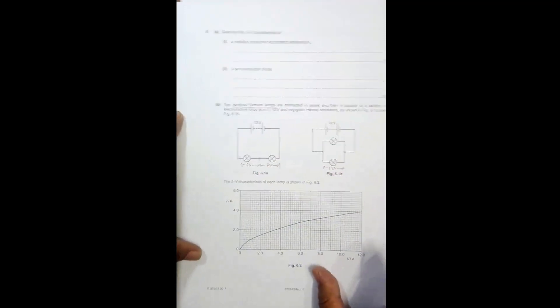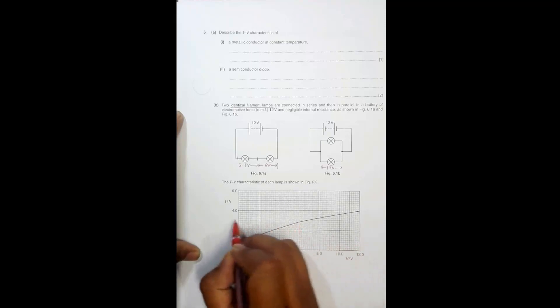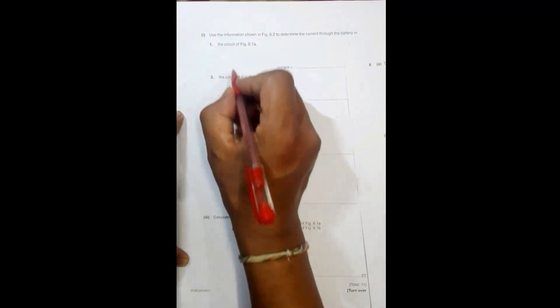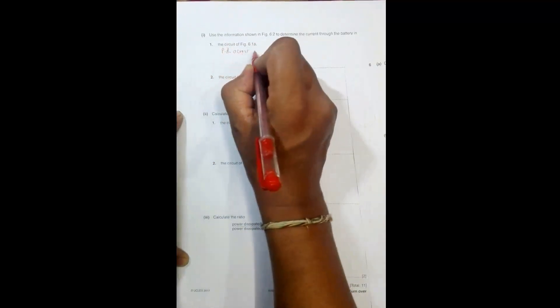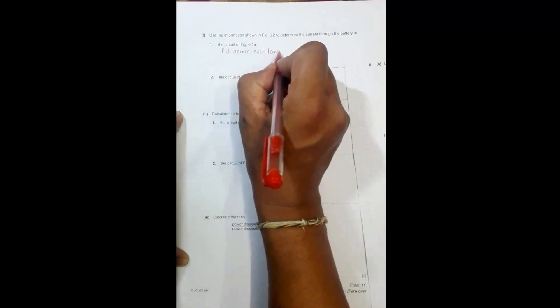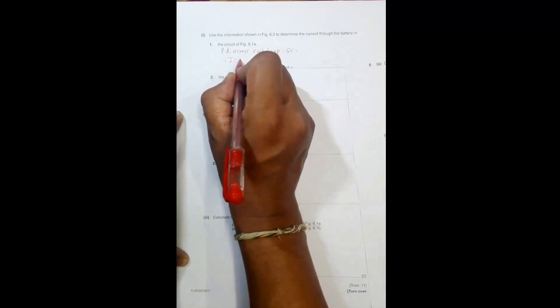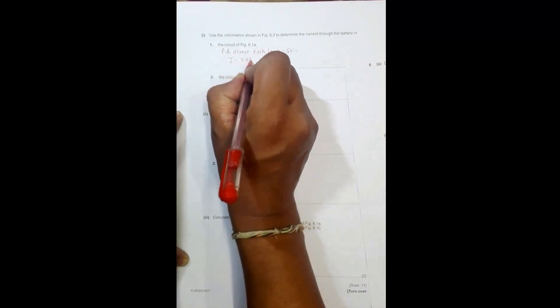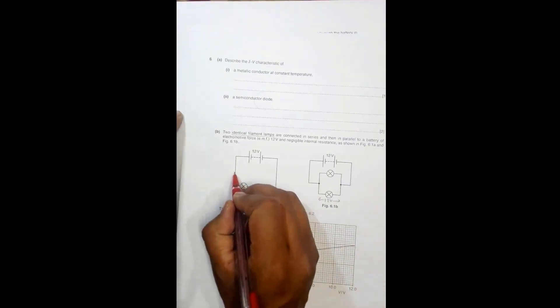At 6 volt, the current from the graph is 2.8 ampere. So PD across each lamp equals 6 volt, therefore current equals 2.8 ampere from the graph. So this is in series, it is 2.8 ampere here and 2.8 ampere here, so current is 2.8 ampere.